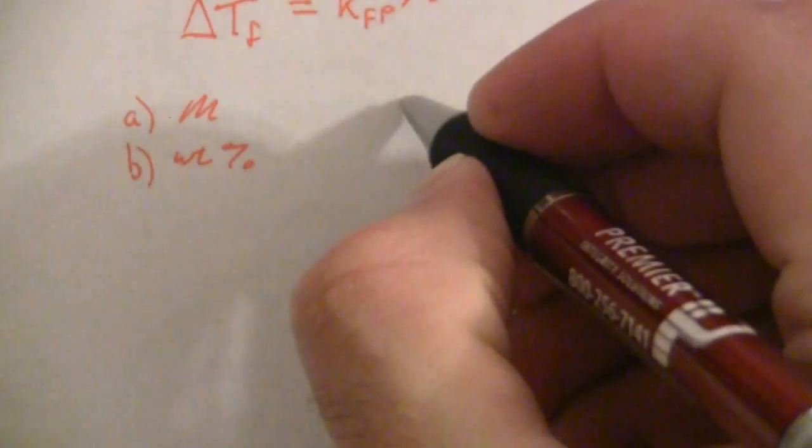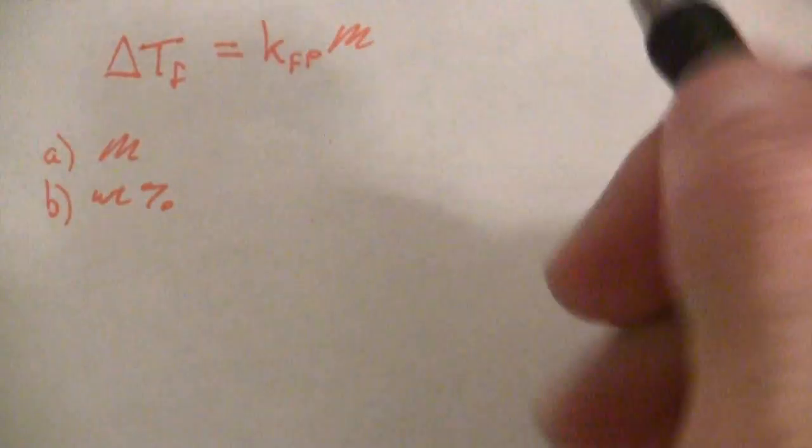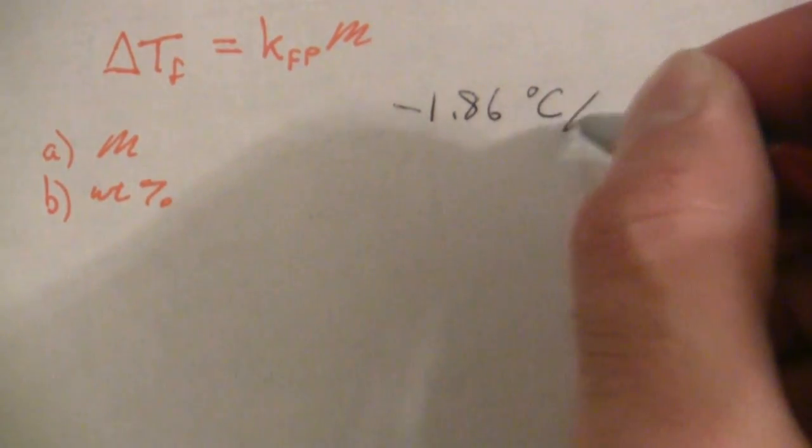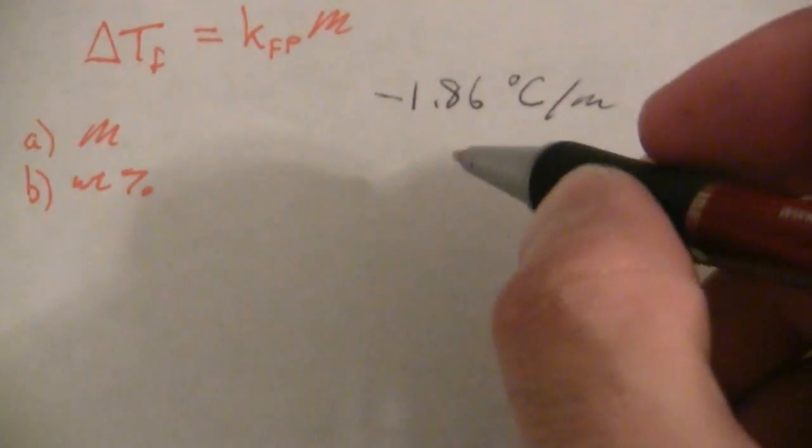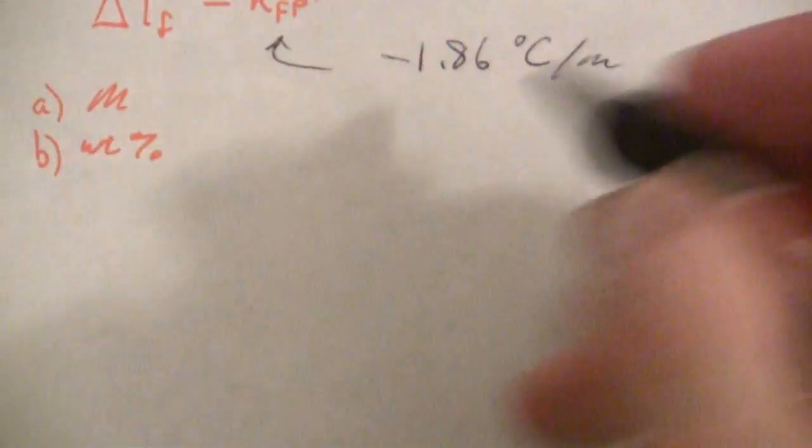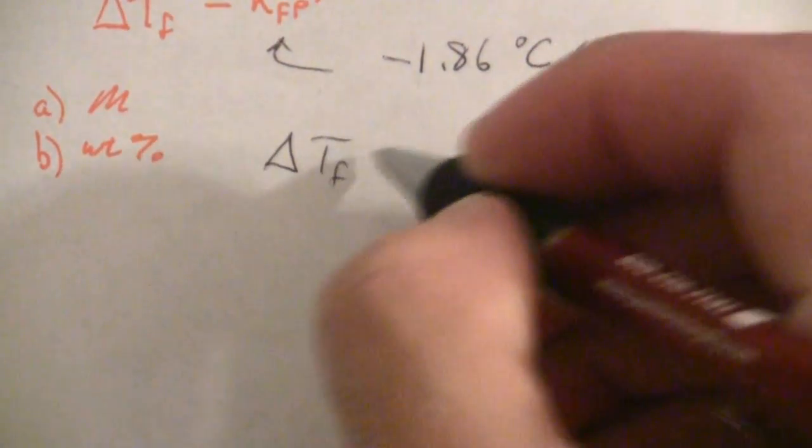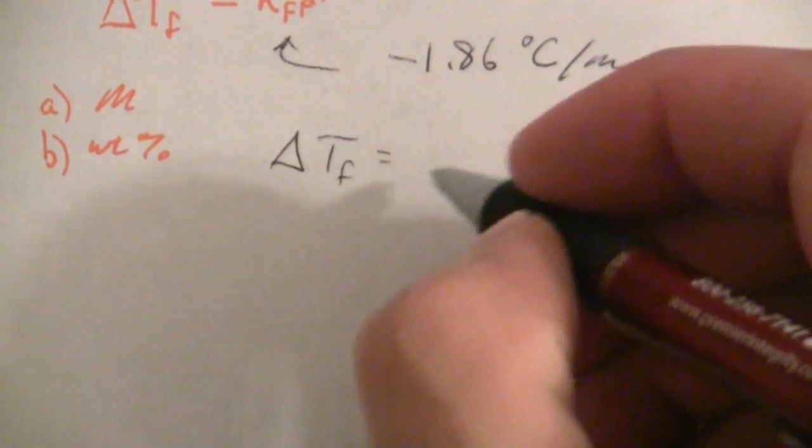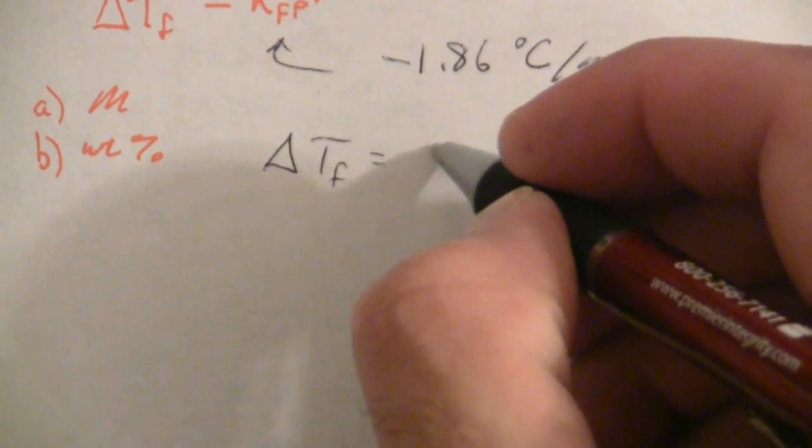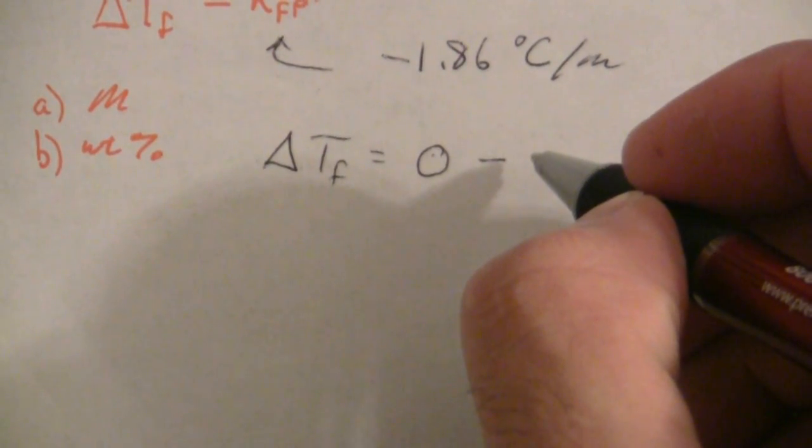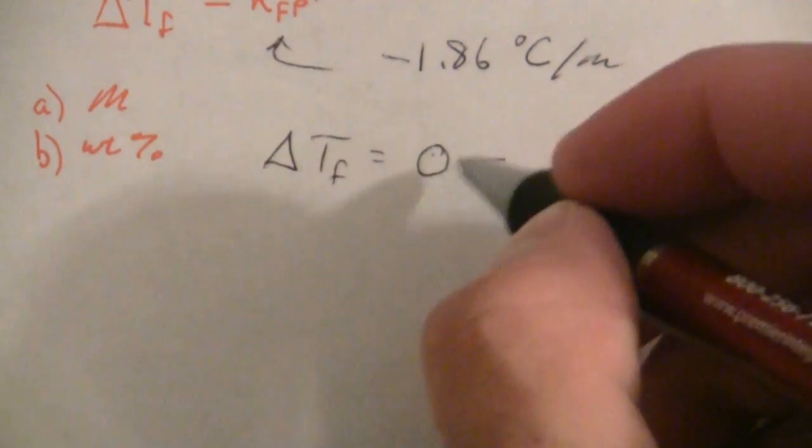So with that, our delta Tf is equal to—actually, it's the other way around—the solution's freezing point minus the pure solvent's freezing point.